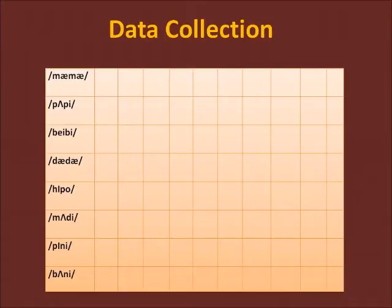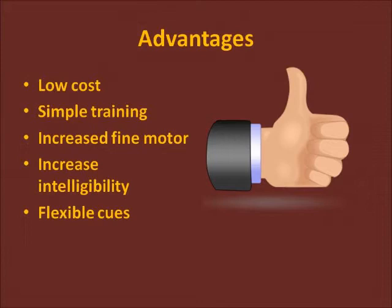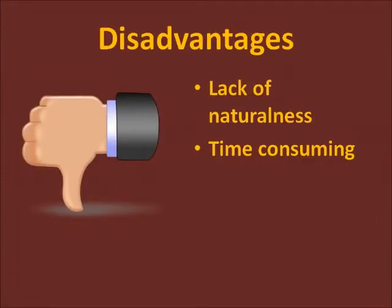We suggest recording treatment sessions using audio and video in order to collect data after the session. Collecting data during the session can cause unnecessary pauses and distractions, especially with a younger client. Advantages to using this treatment approach are low-cost, simple training for parents and caregivers for use outside the therapy setting, provides increases for the child's proprioception and fine motor movement, increased intelligibility from corrected sequencing, and cues can be altered depending on clients' needs and abilities. Disadvantages include lack of naturalness in communicating with people who are unaware of the cues, and the need to be intense for effectiveness, which can become time-consuming.